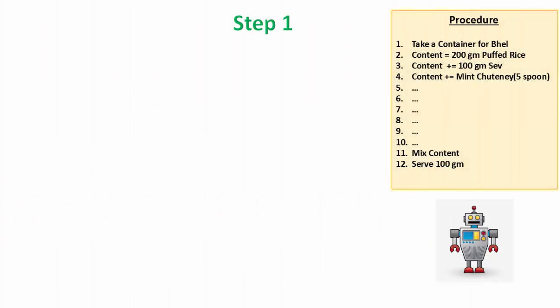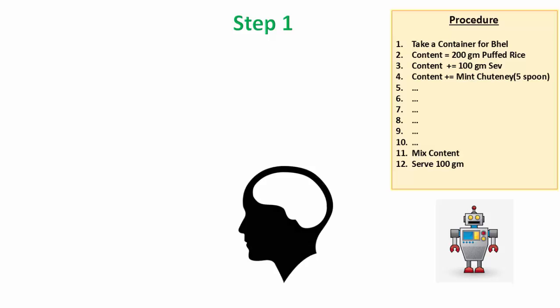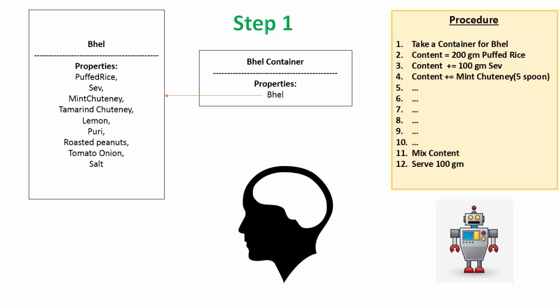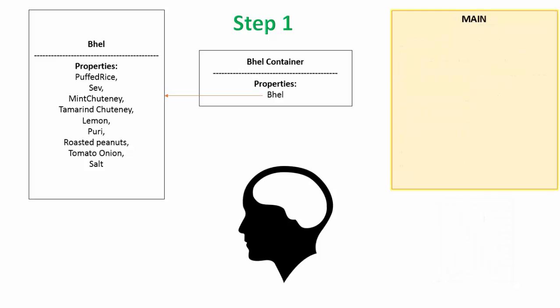Step 1. On reading the procedure, which is nothing but recipe here, our brain understands and creates different entities. First entity is bhel container, which contains the object of bhel. Now, bhel template is understood with various ingredient properties. Then the brain tries to figure out how these entities are going to interact with each other.